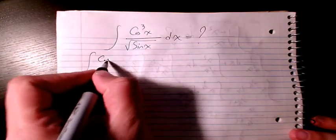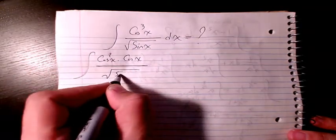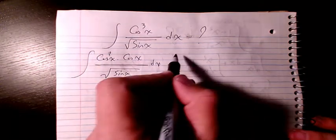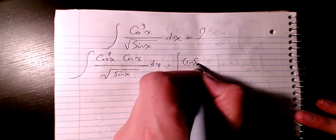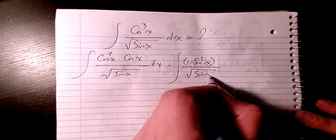...to cosine squared x times cosine x divided by square root of sine x dx. Then from trig identity, we know cosine squared is the same as 1 minus sine squared x divided by square root of sine x.